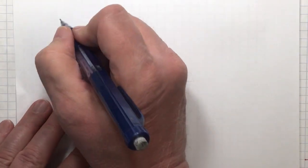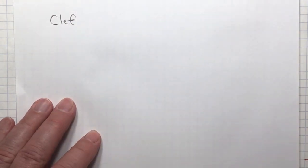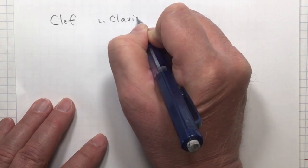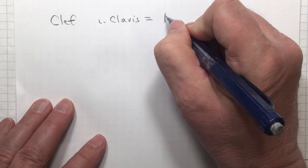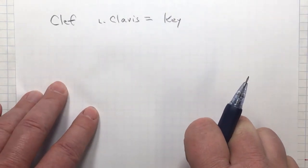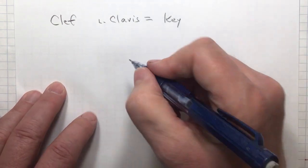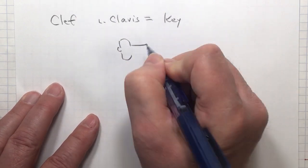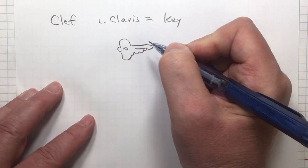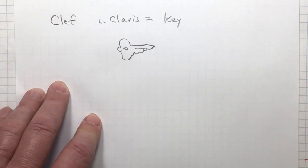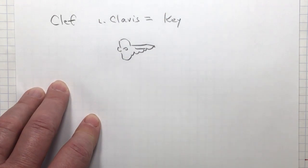This clef comes from the Latin word clavis, means key. Not a piano key or a key signature, but a key like this. A key that unlocks the secrets of the staff. The secrets of the staff being the names of the lines and spaces.